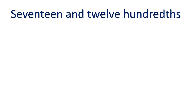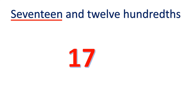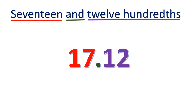Another one: we have 17 and 12 hundredths. We start with the whole number 17, then the decimal point for 'and,' then 12 hundredths, so we write 12. We make sure the rightmost number is placed in the hundredths place — the 2 is the rightmost and it is in the hundredths place, which is correct. So that is 17.12.